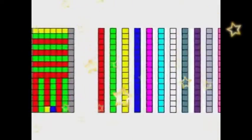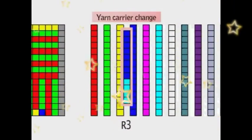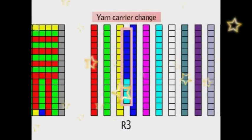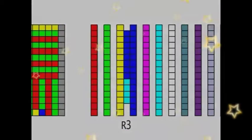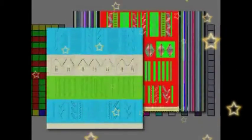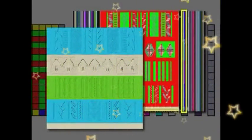First of all, option line R3, yarn carrier change. To switch the yarn carrier in course direction, specify the range with different color. This is an example of actual yarn carrier setting.